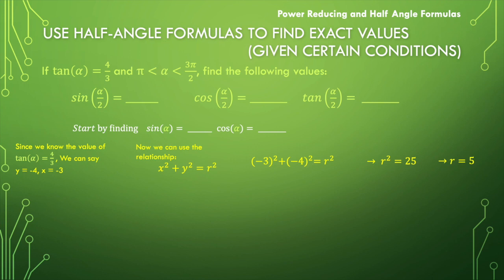Now I've got everything I need to identify the sine of alpha, which is y over r, or negative 4 fifths, and the cosine of alpha, which is x over r, or negative 3 fifths. So I know quite a bit about alpha now.